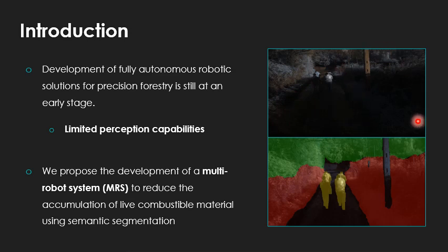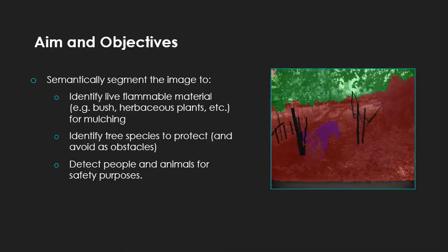In this project, we propose the development of a multi-robot system to reduce accumulation of live combustible material using semantic segmentation. Specifically, our aim is to semantically segment the image to identify any flammable material on the ground that our robot can clean up, such as bush. That will be the red label in the image. We also need to be able to differentiate between the flammable material and what is not supposed to be cut down, such as the trees in green here. Those need to be protected and avoided. Lastly, for safety measure, we need to also detect people and animals to avoid any catastrophic mistake. There will be the horse in purple, for example.